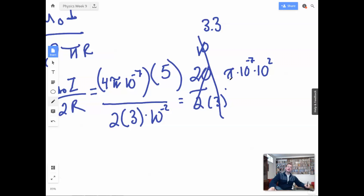Pi times 3. Probably should actually figure out what else. This is gonna be 10 to the negative 5th. So we're gonna have 3.3 times pi.